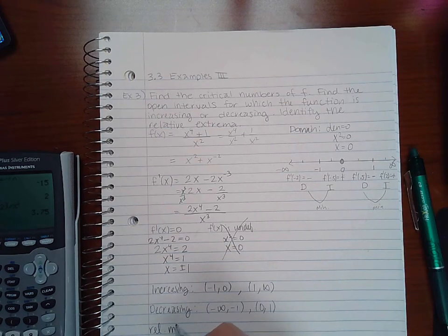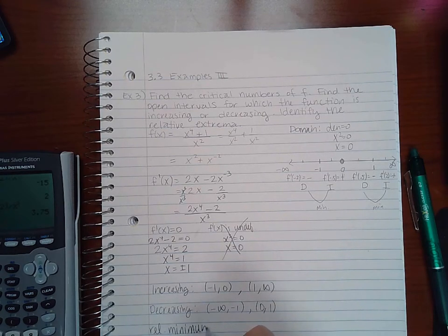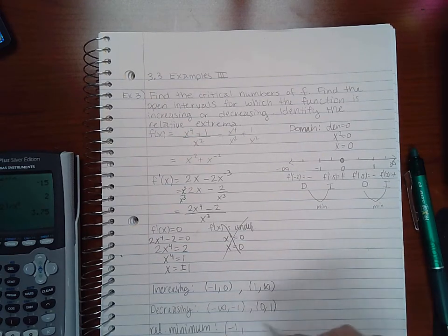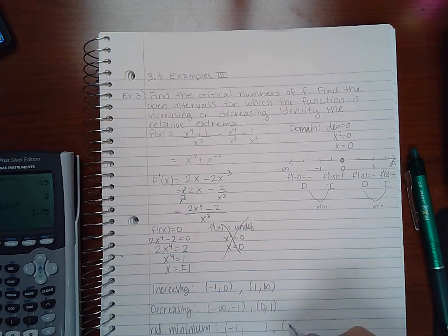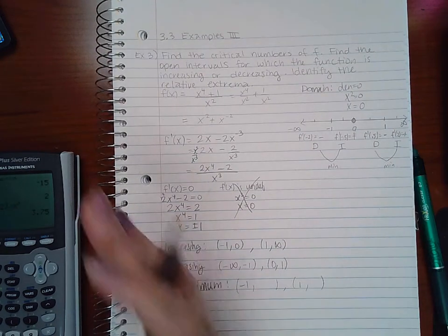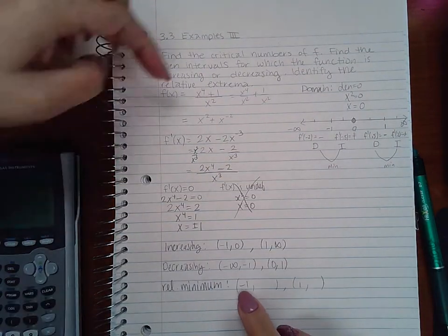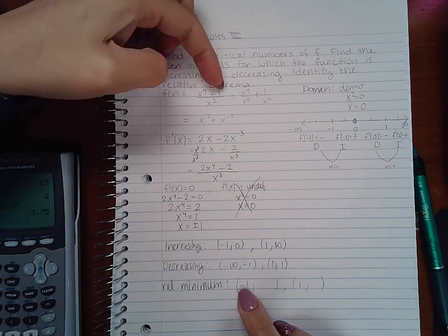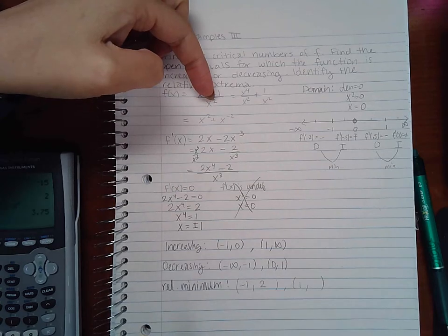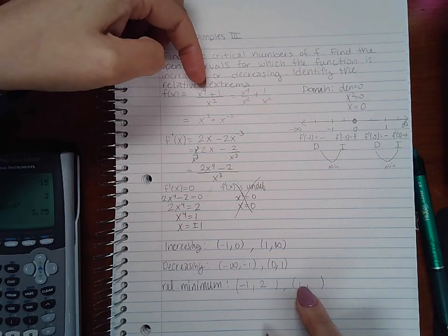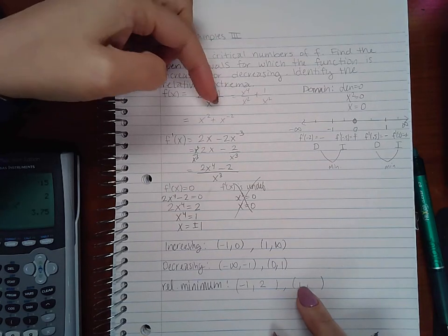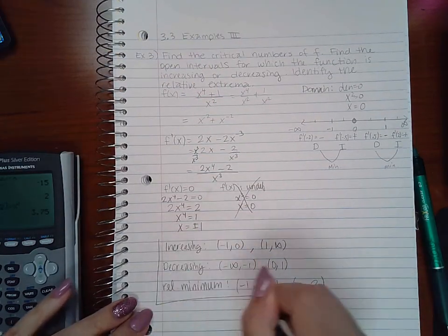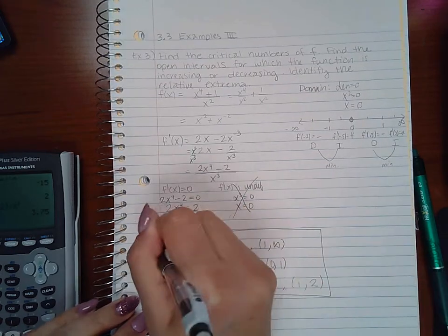The relative minimum occurs at x equals negative 1 and x equals 1. To find the y-values, plugging in negative 1 gives 1 plus 1, which is 2, over 1, so y equals 2. Plugging in positive 1 gives 1 plus 1 over 1, also 2. So the relative minima are at (-1, 2) and (1, 2).